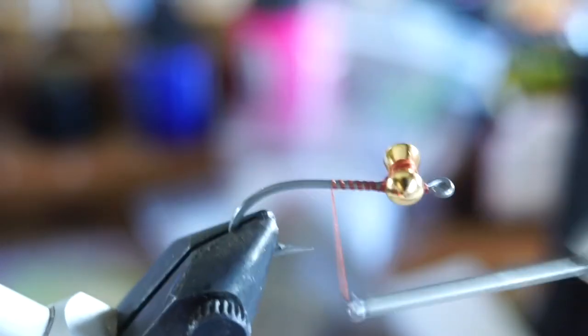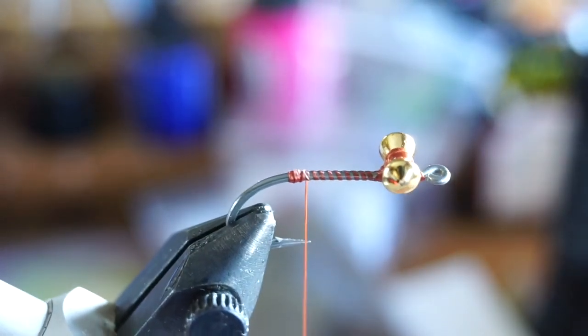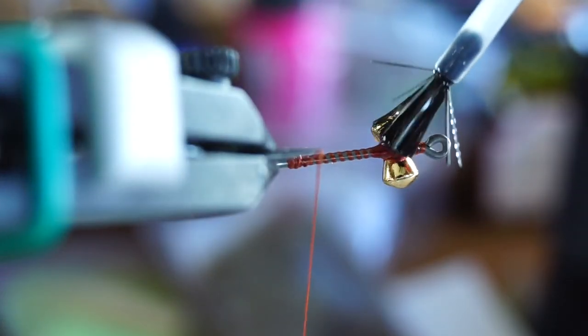Then bring your thread all the way back to the start of the bend of the hook and make a small thread bump there, and then end with your thread just ahead of the bump. To give extra security I like brushing a bit of super glue onto the thread which should keep it from spinning.